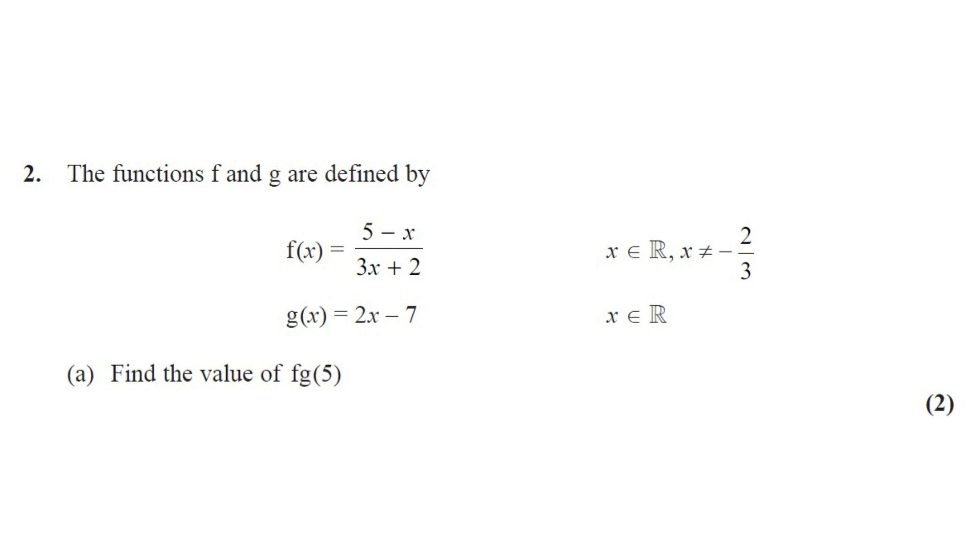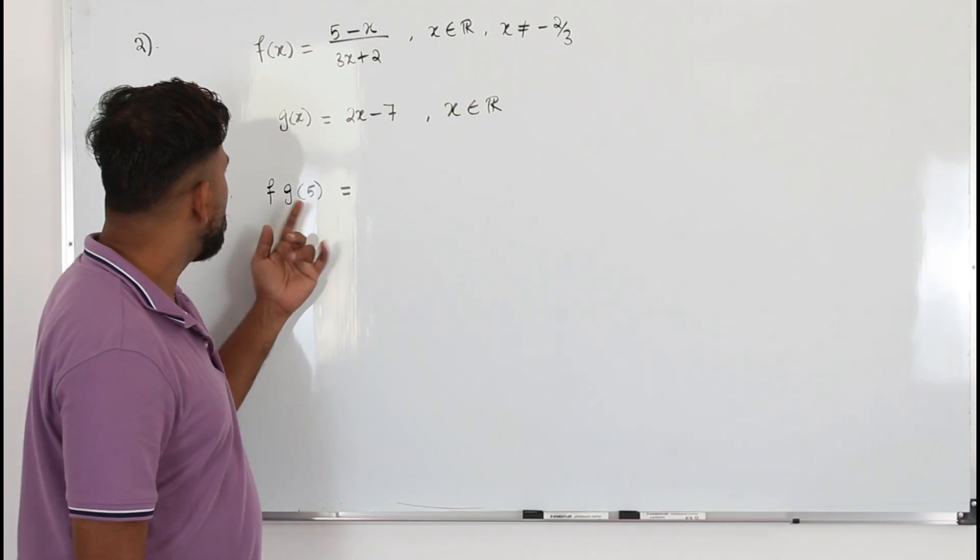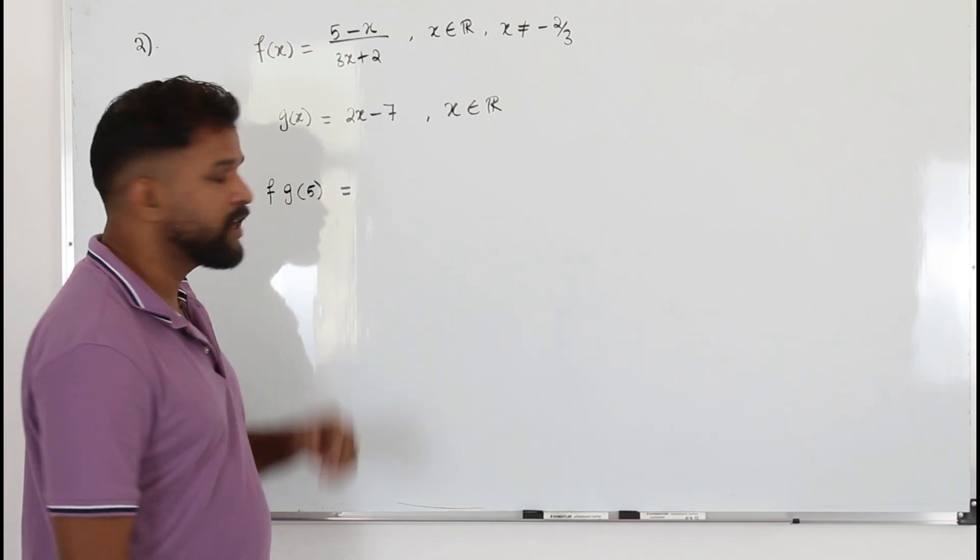Question number two. The functions f and g are defined by f(x) = (5 - x) / (3x + 2) and g(x) = 2x - 7. Part a, find the value of fg(5). This question got two marks. Here in part a, we have this composite function fg(5).